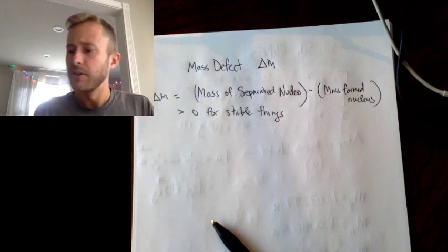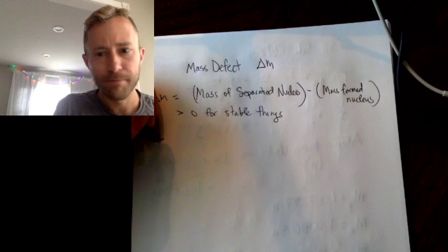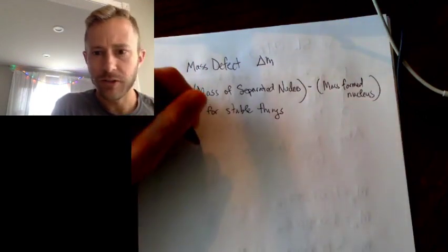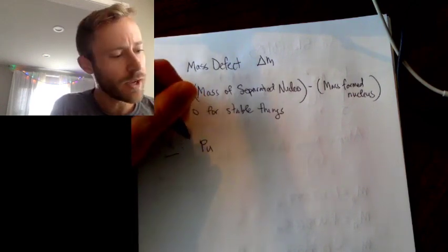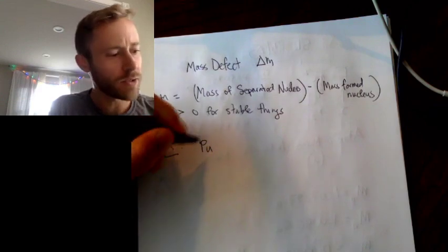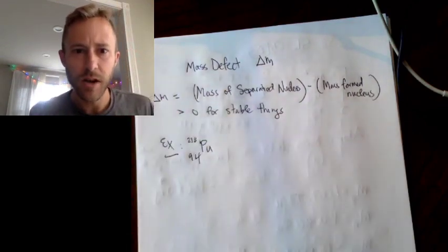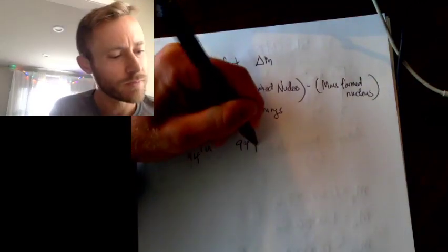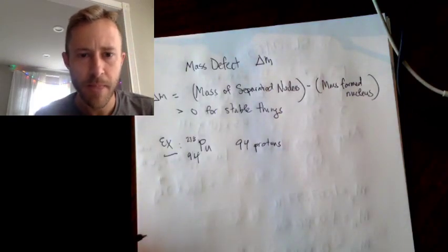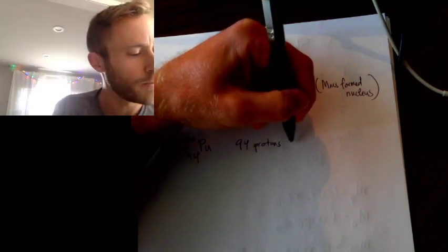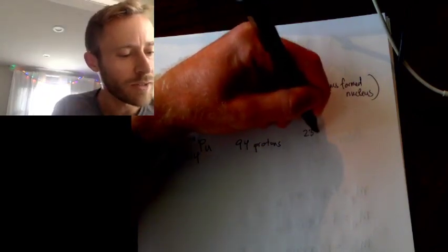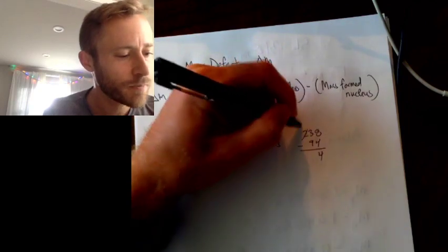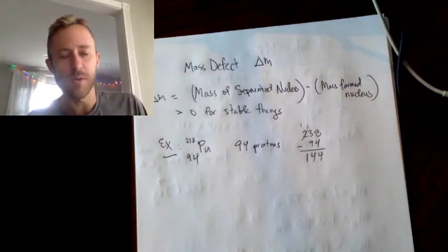Let's do an example and compute the mass defect for plutonium-238. Plutonium has atomic number 94 and mass number 238, so that means there are 94 protons. The number of neutrons is 238 minus 94, which equals 144 neutrons.